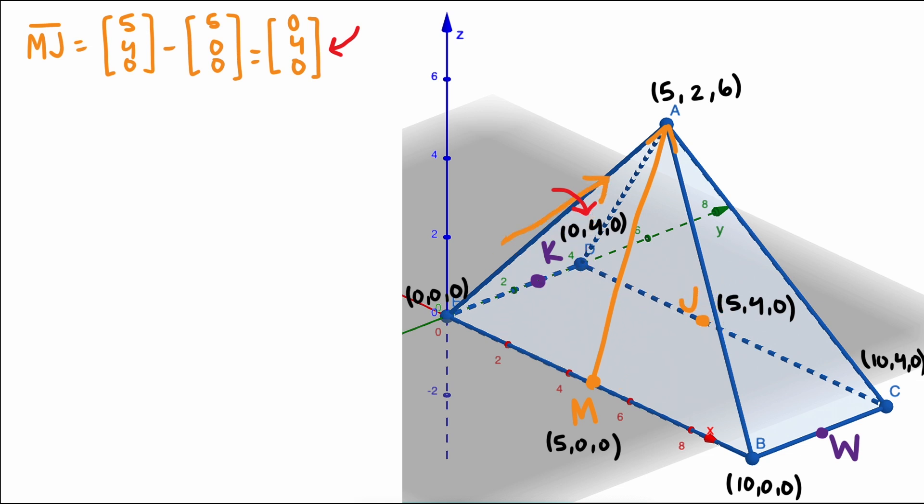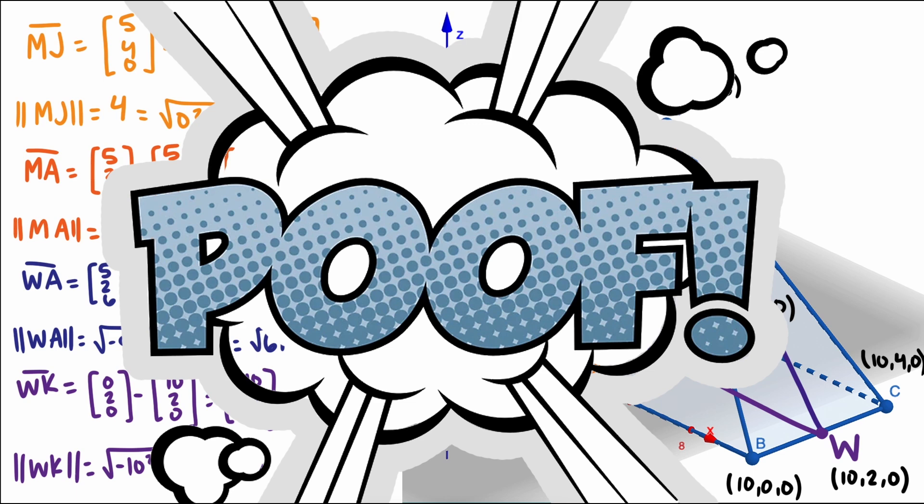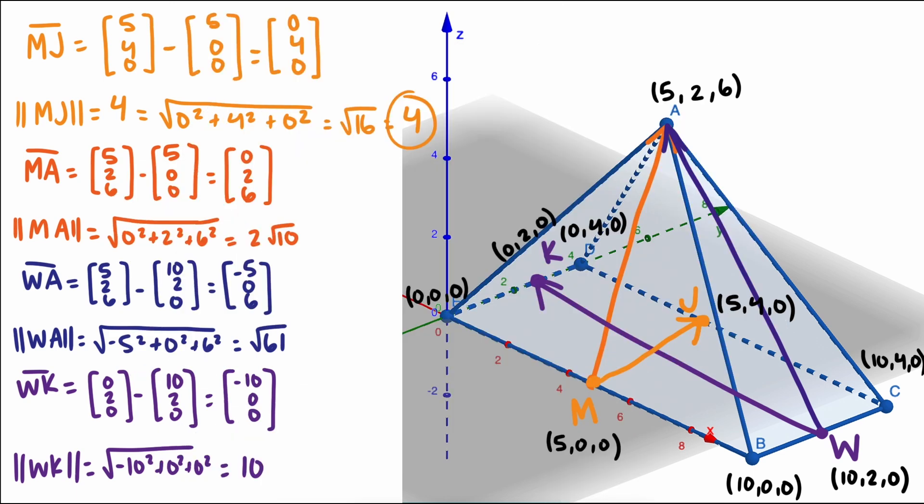It's not tied to coordinate points and can exist anywhere on our diagram and maintain that same value. Now the length of MJ should be pretty obvious, 4. But not all these lengths will be. To find the length of a vector, you square root the dot product of a vector with itself. And look at that, we still get 4.